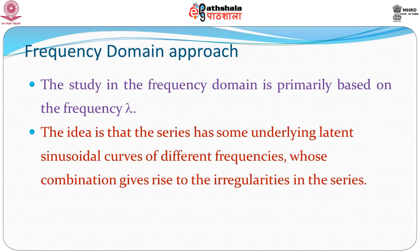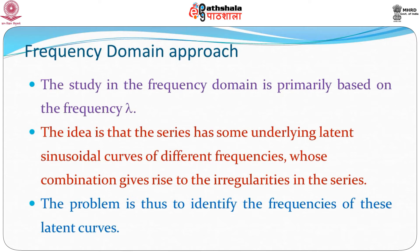The idea is that the series has some underlying latent sinusoidal curves of different frequencies whose combination gives rise to the irregularities in the series. If you have nice sinusoidal curves, they should give you a regular series — it might even become deterministic. But with a combination of these curves along with some randomness, you get a resultant time series, and the problem becomes to look at the series and identify the underlying curves — that is, identifying the frequencies that give rise to these underlying curves.